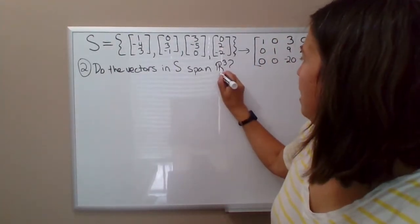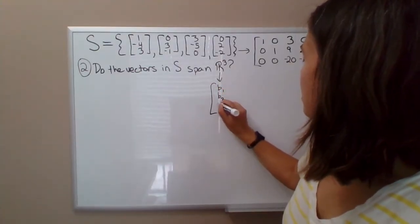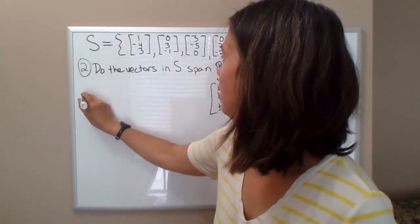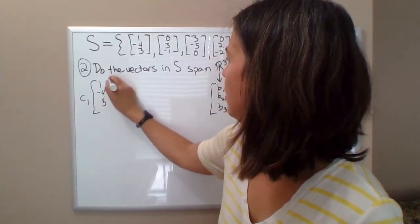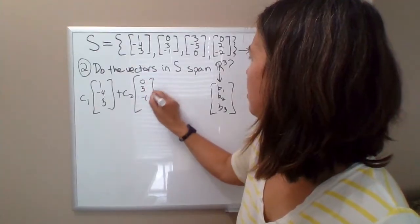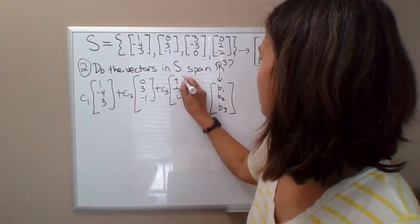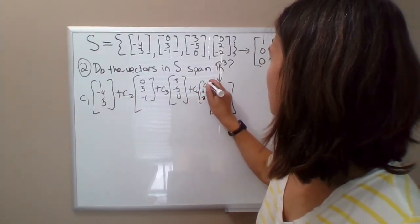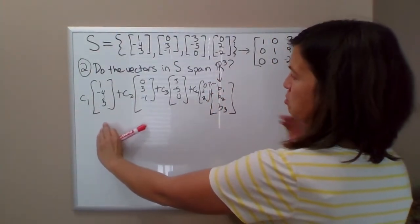So they span R³ if we can take any vector in R³, let me write it as B1, B2, B3, and write it as a linear combination of these four vectors. So if we did C1 times the first vector plus C2 times the second vector, and you get the idea, zero, two, negative two, I'm sorry for my handwriting here, equals B1, B2, B3.